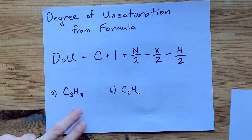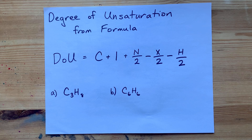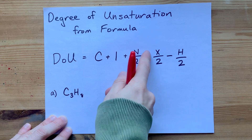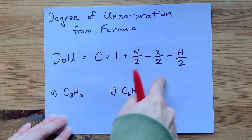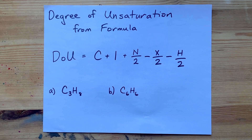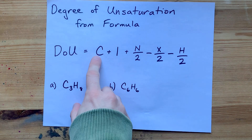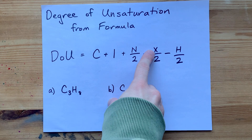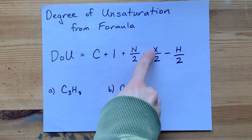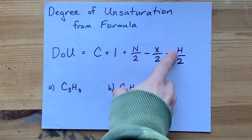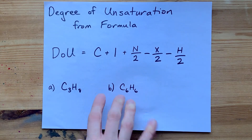The formula your teacher gave you might have been: (2C + 2 + N − X − H) / 2. I've simplified it slightly here, but they're the same formula. Plug in the number of carbons for C, the number of nitrogens for N, the number of halogens — that's fluorine, chlorine, bromine, and iodine — for X, and the number of hydrogens for H.